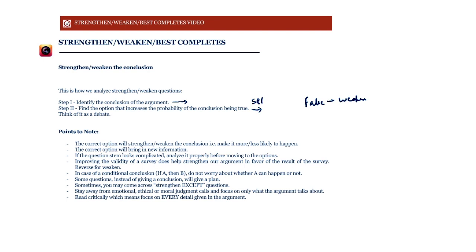There are a few key points to note for both strengthen and weaken questions, and the points are the same for both, since the two question types are very similar. The correct option will strengthen or weaken the conclusion — making it more or less likely to happen. Bear in mind that we do not need to establish the conclusion or prove it wrong. We only need to make it more or less likely. Of course, if an option does establish it, that's fine — it just strengthens it a great deal — but an option that only makes it more likely is also correct.